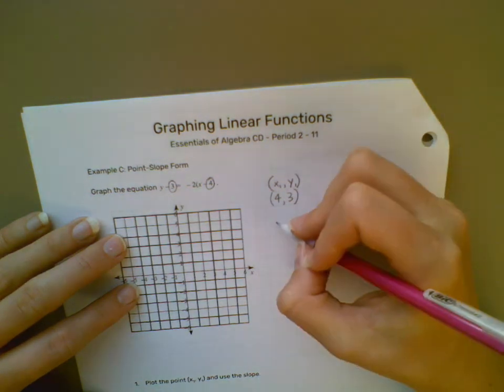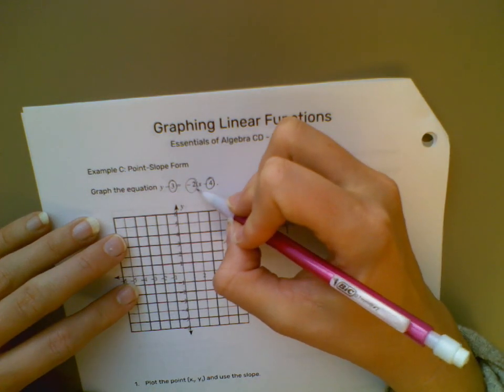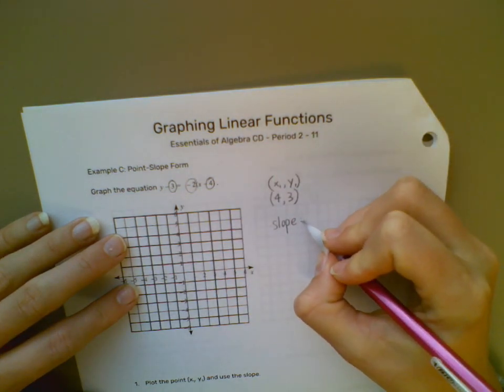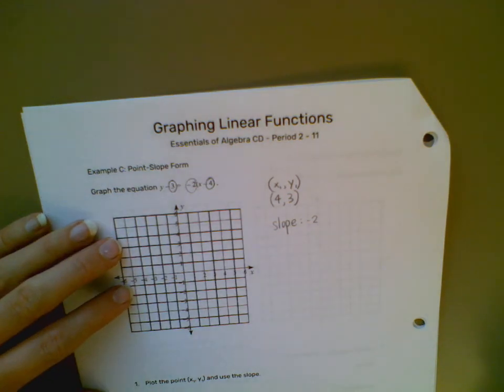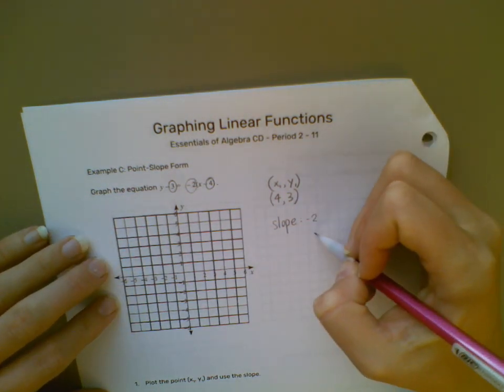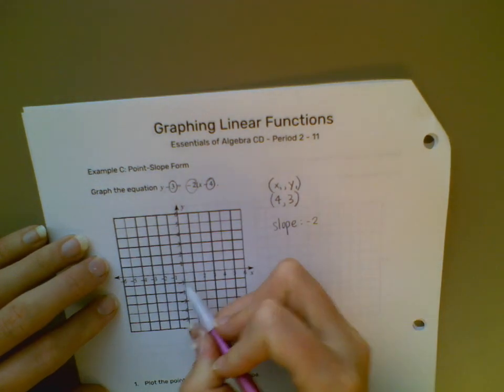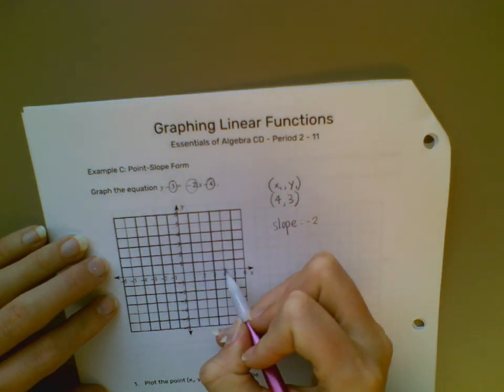And then our slope is the coefficient right here. It's going to be negative 2. So I first go ahead and plot my point, and then I use my slope. From the origin, I'm going to go over 4 and then up 3.